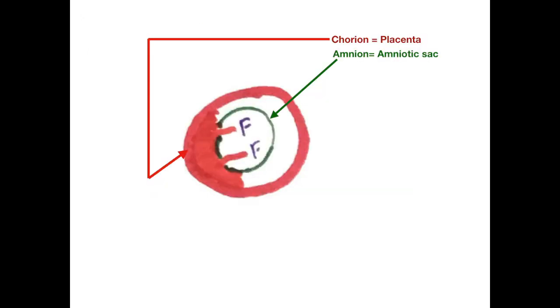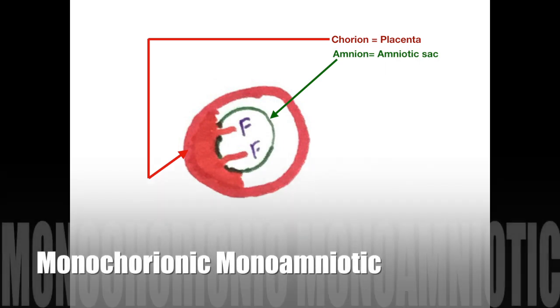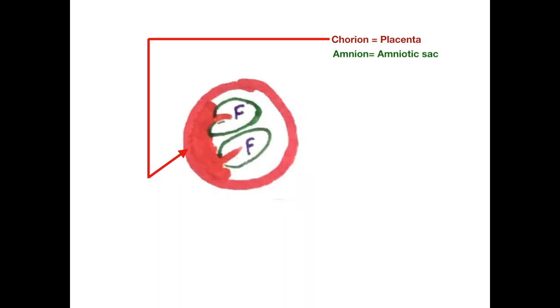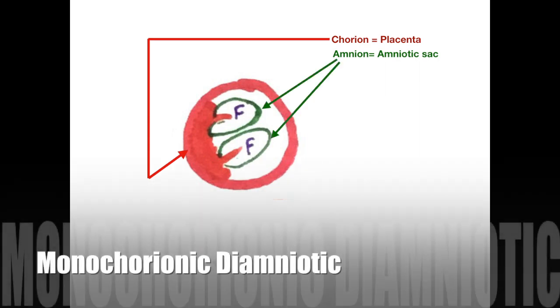Twins which share one placenta and one amniotic sac are monochorionic monoamniotic. Some twins might share one placenta but might still have two separate amniotic sacs. These are monochorionic diamniotic.